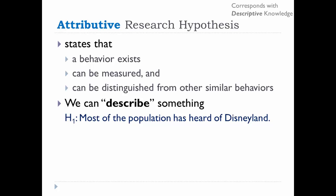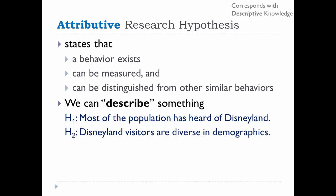Another example is that Disneyland visitors are diverse in terms of demographics, such as sex, ethnicity, income levels, etc. We can do a survey of visitors asking demographic questions in our effort to support this attributive research hypothesis.